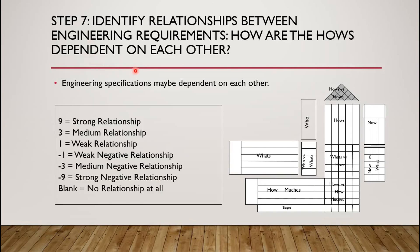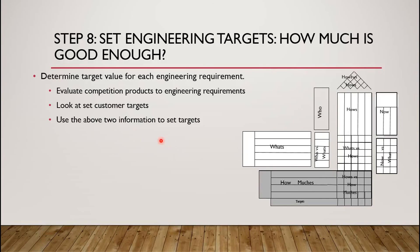Step 7 is to identify relationships between engineering requirements. Engineering specifications may be dependent on each other. This part determines how strongly the specifications are related to each other. Step 8, the final step: we establish a set of engineering targets and identify how much is good enough. We evaluate the competition's product and look at the customers we target in order to have a clear objective on how much we should improve, making it cost effective for both the customer and the producer.